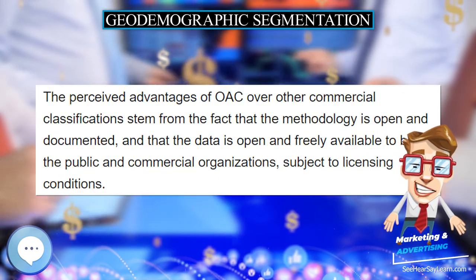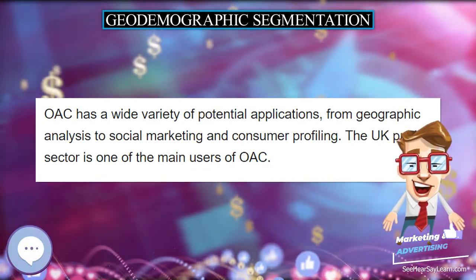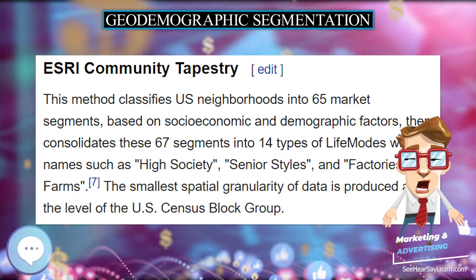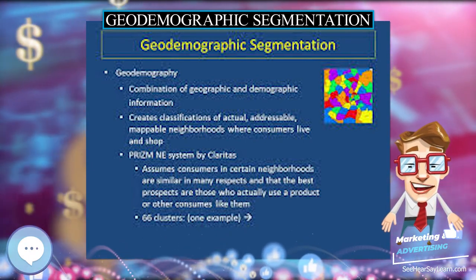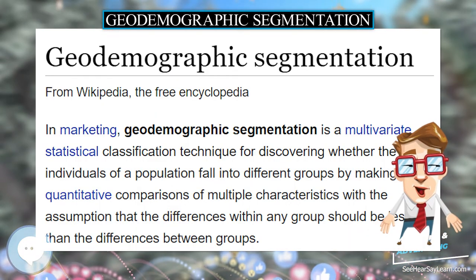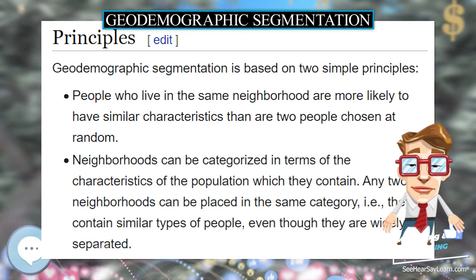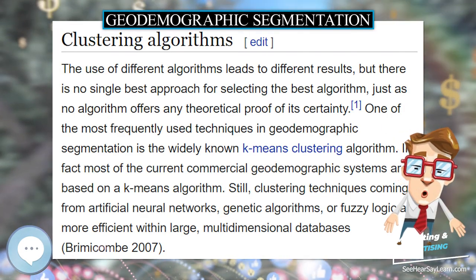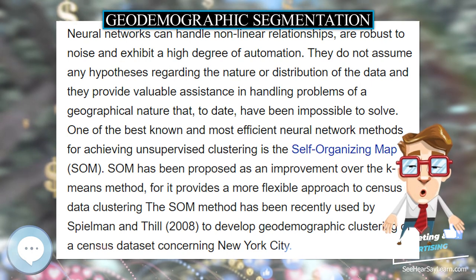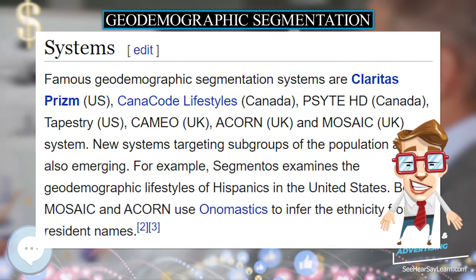The Output Area Classification (OAC) is the UK Office for National Statistics' free and open geodemographic segmentation based upon the UK Census of Population 2011. It classifies 41 census variables into a three-tier classification of 7, 21, and 52 groups. The perceived advantages of OAC over other commercial classifications stem from the fact that the methodology is open and documented, and that the data is freely available to both the public and commercial organizations, subject to licensing conditions. OAC has a wide variety of potential applications, from geographic analysis to social marketing and consumer profiling, and the UK public sector is one of its main users.